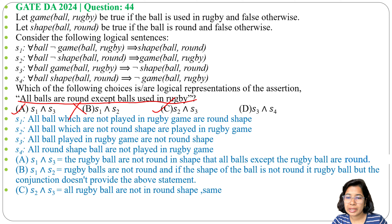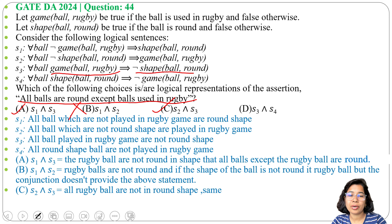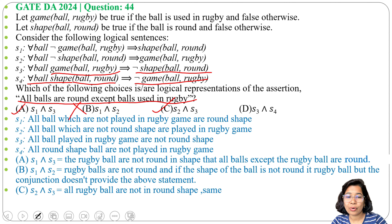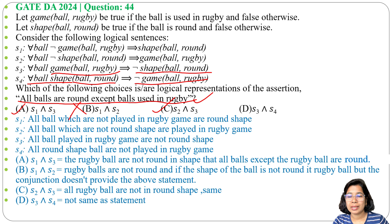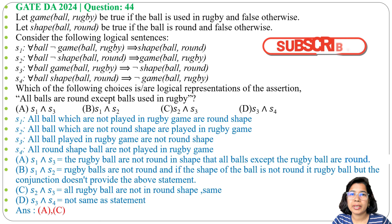Option D is S3 and S4. S3 states: for all balls, if a ball is played in rugby game, it is not round. S4 states: for all balls, if it is round, it is not played in rugby game. Both are contrapositives of each other, so their conjunction is not the same as the original statement. That's why option D is also incorrect. The final answer is option A and option C. Options B and D are not correct.